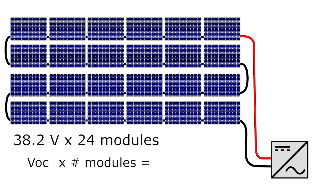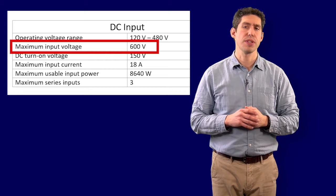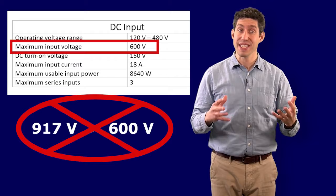The VOC at STC is 38.2 volts and multiplied by 24 modules gives us a total system voltage of 917 volts. By looking at the spec sheets on the inverter, we see that the maximum input voltage is 600 volts. That means that this system in a series string will not work with this inverter, and it's also an excessively high voltage.